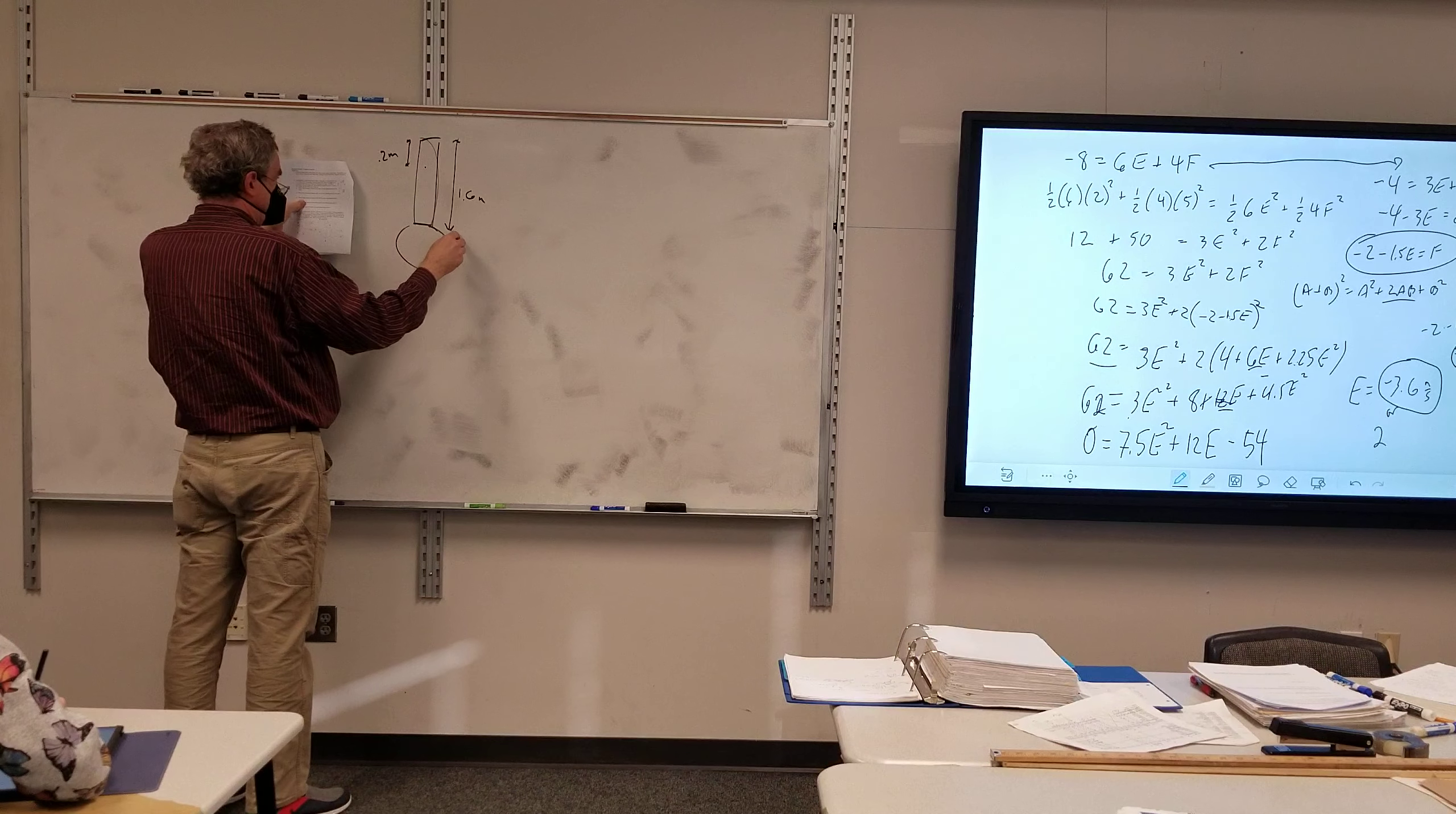So you get it down to that and then we added up like terms to get that 7.5E squared, right? And then where did that 12E come from? That came from here. When I squared this, the middle term, A plus B squared is A squared plus 2AB plus B squared.